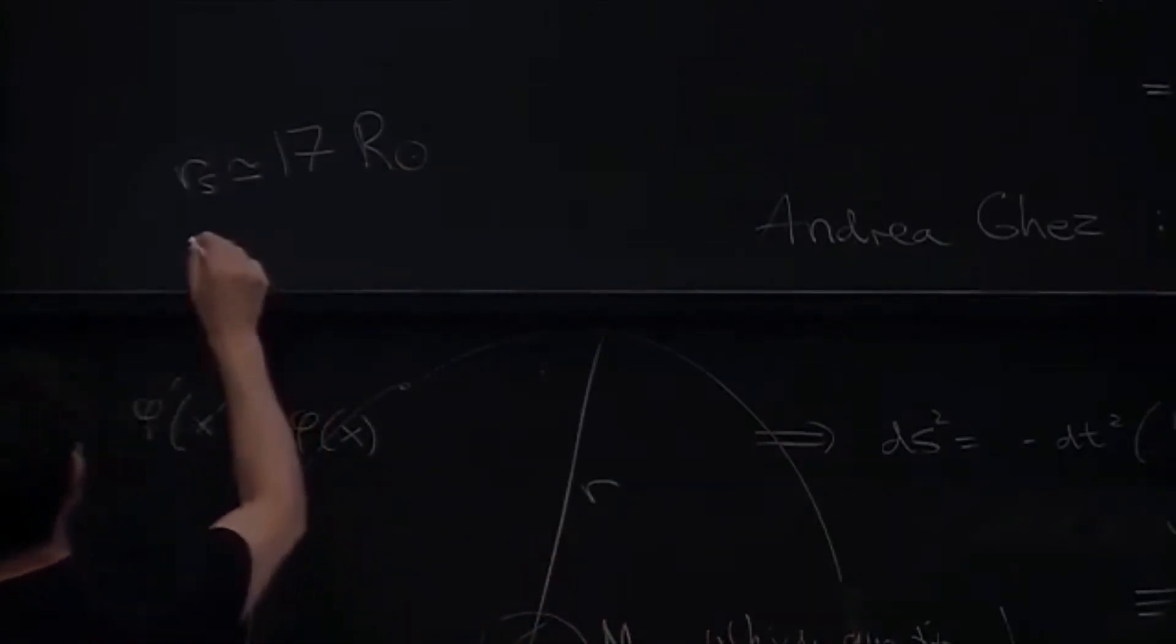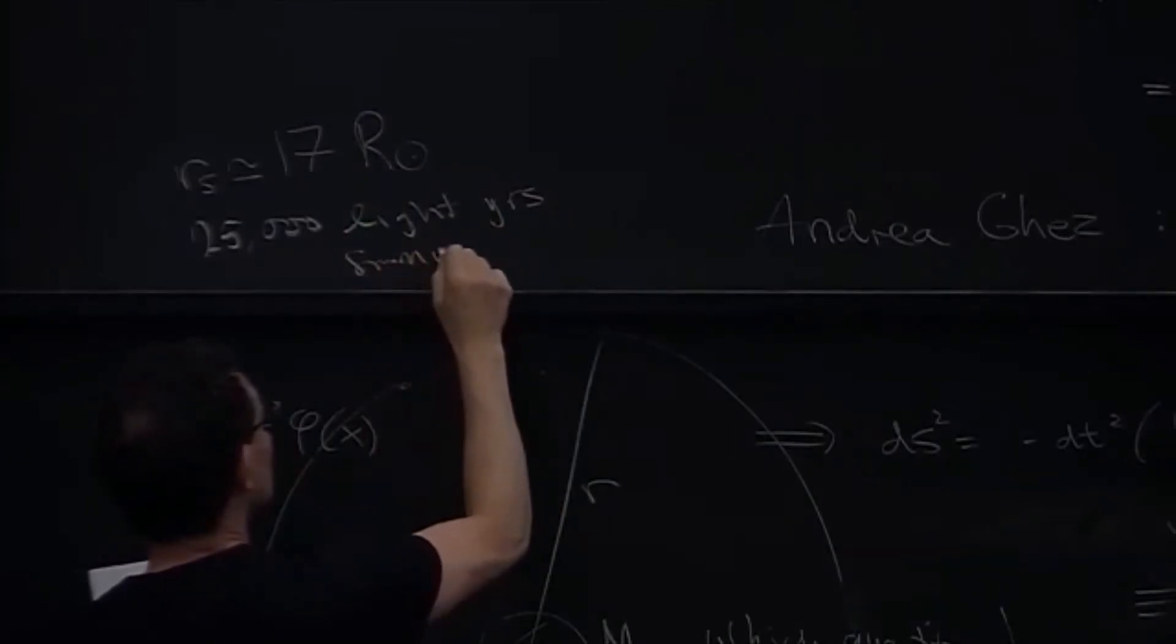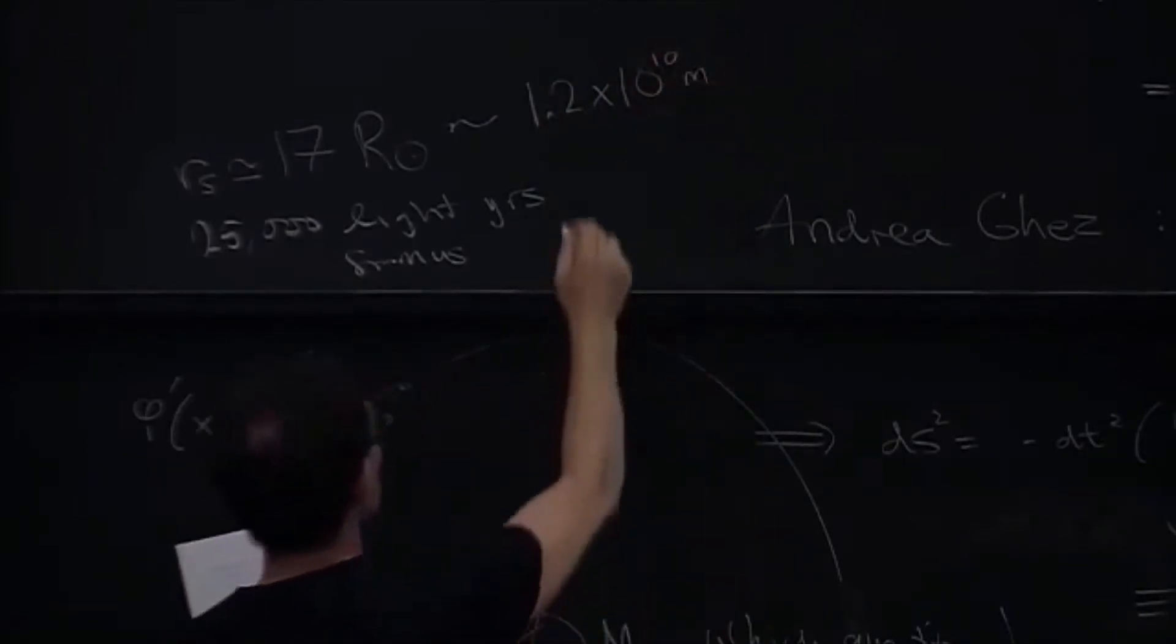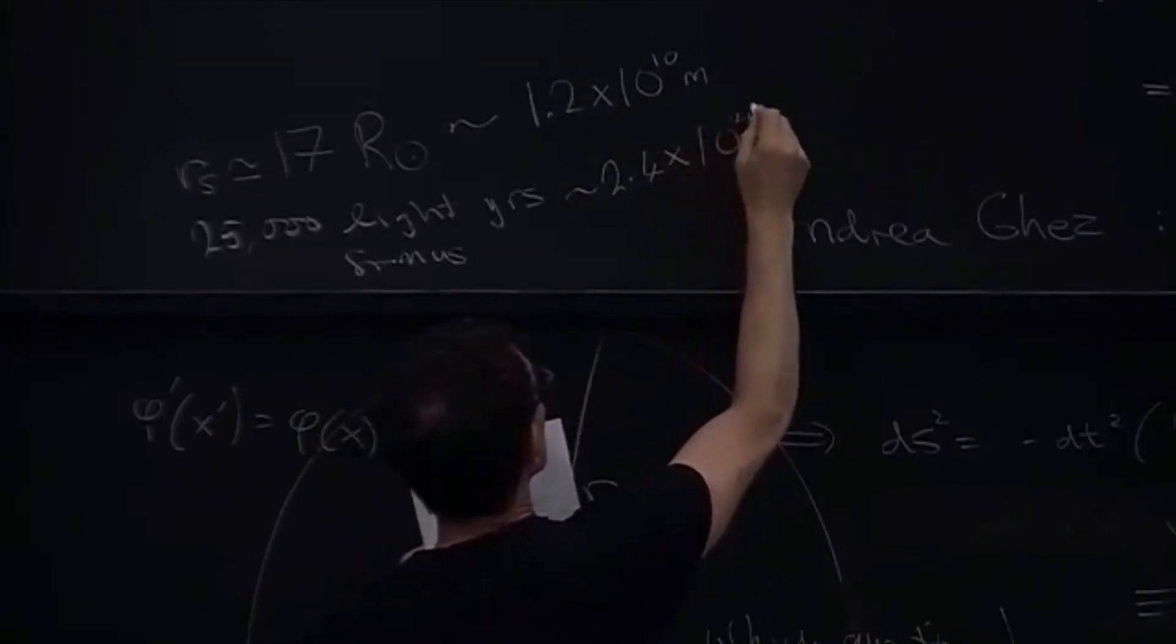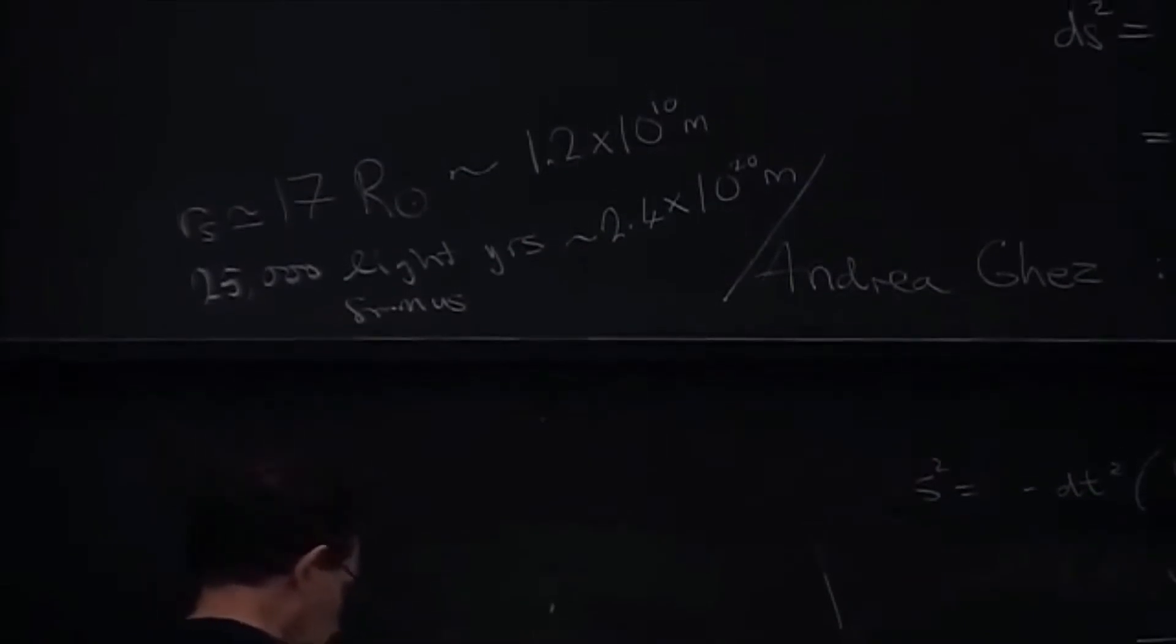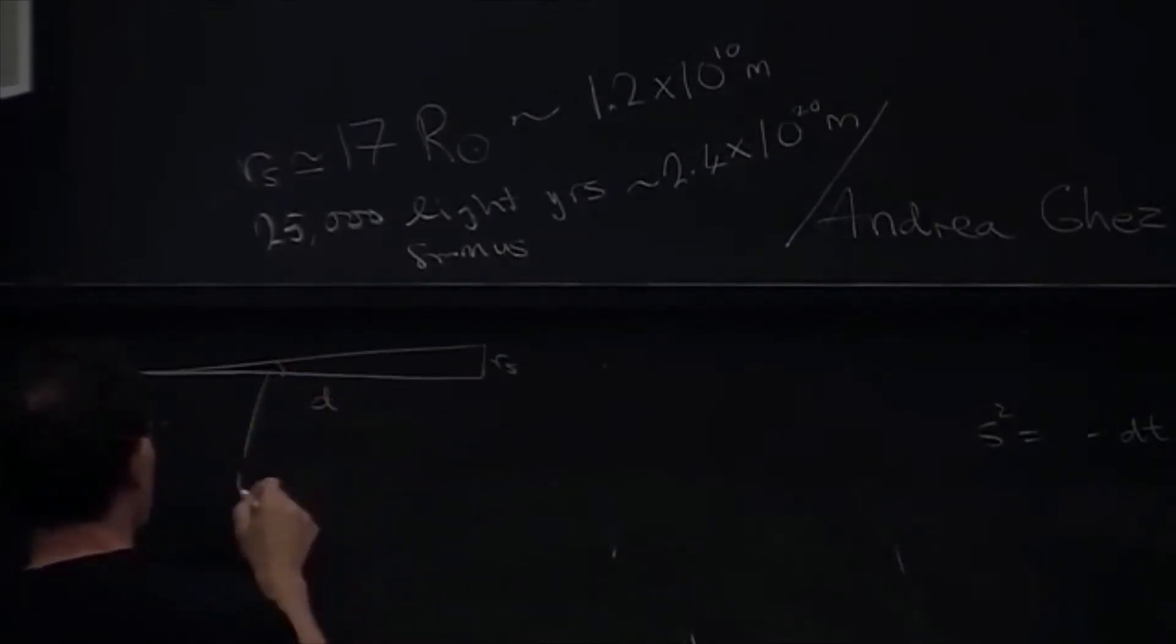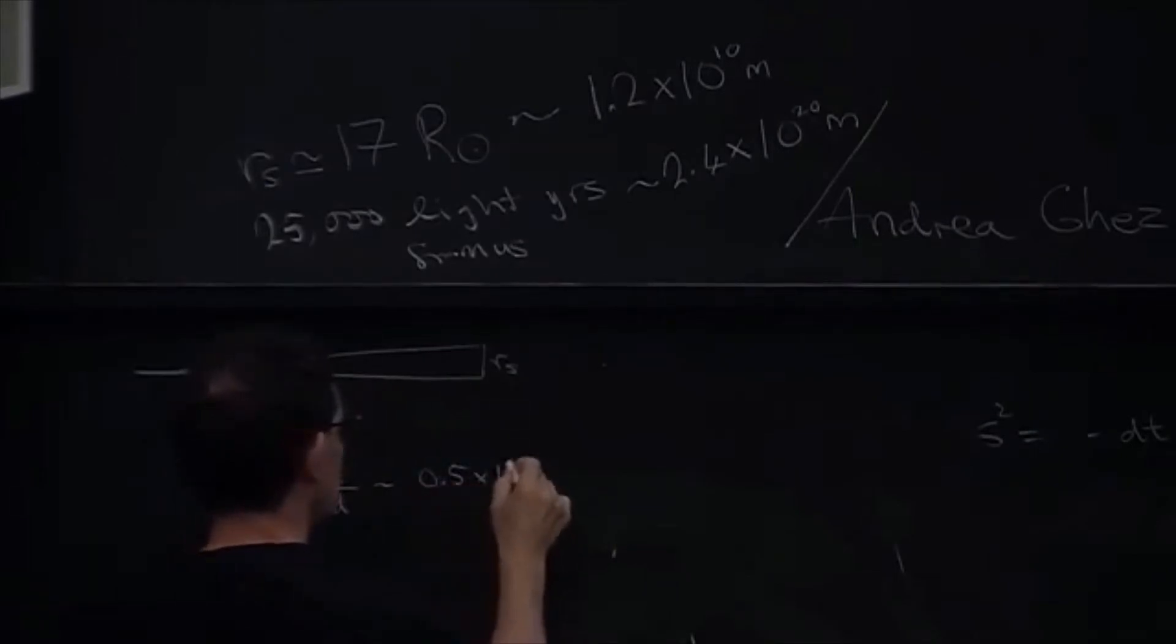And as I said, it's located twenty-five thousand light years away from us. So this Schwarzschild radius translates into 1.2 times 10 to the 10 meters. Twenty-five thousand light years is 2.4 times 10 to the 20 meters. So from this you can get the angle, the angular size on the sky. That's what astronomers care about. So obviously there's this object, here's its Schwarzschild radius, and it's at some distance d. So the angle it subtends on the sky is Rs over d, and that is approximately 0.5 times 10 to the minus 10 radians. It's a very, very tiny angle.